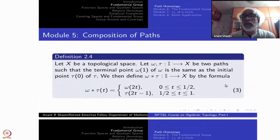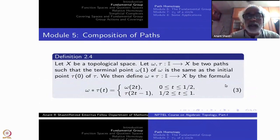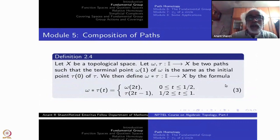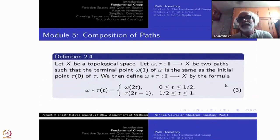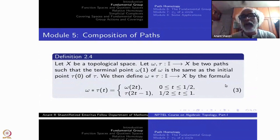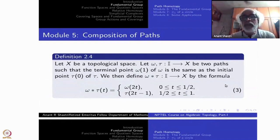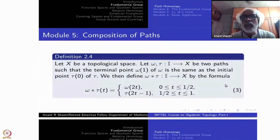This is not the composition of functions — it is not like x to y, y to z. Both ω and τ are maps from I to X. What we need is ω(1) must equal τ(0), then we can define ω★τ. This is exactly the same way as we defined concatenation of two homotopies. In the first half of the interval, 0 ≤ t < 1/2, we define it as ω at double the speed: ω(2t).